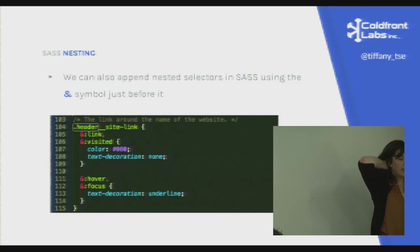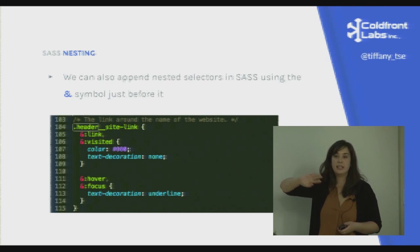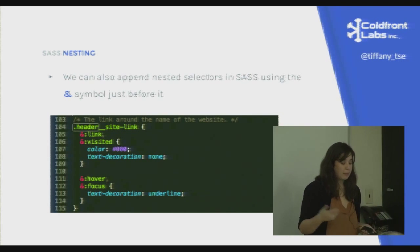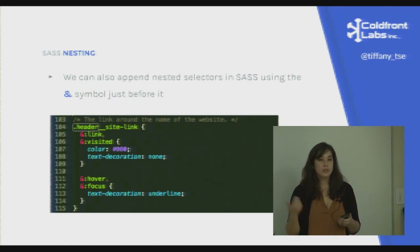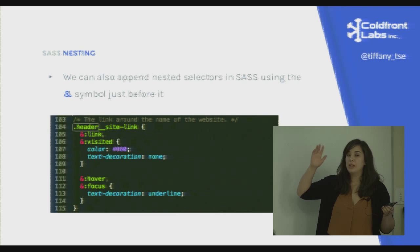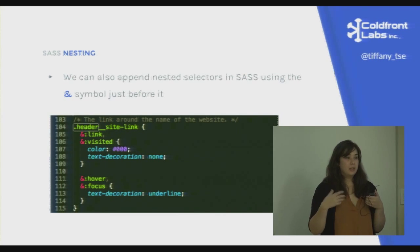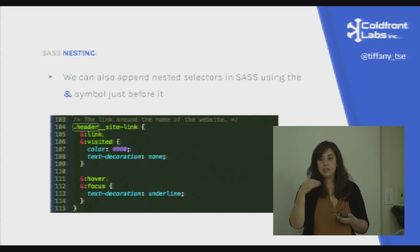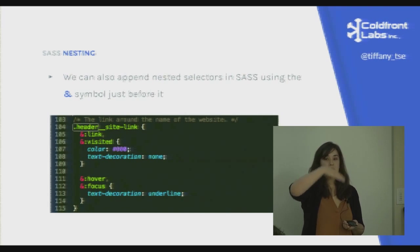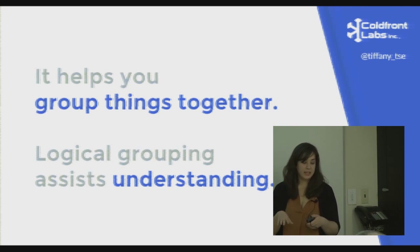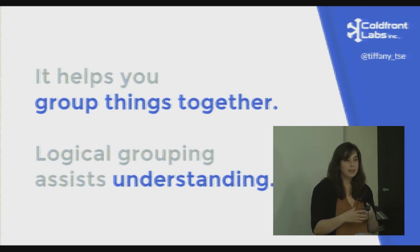We can also append nested selectors using an ampersand. For example, if `.header-site-link` is a class on a link, we can target its hover and focus states by putting an ampersand in front of those pseudo-classes inside the nested block. You can also do this with classes — if you have a `.box` selector but also an additional class `.red` on the same element, you can write `&.red` inside the nested `.box` to target that combination.